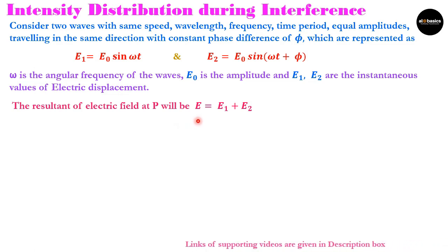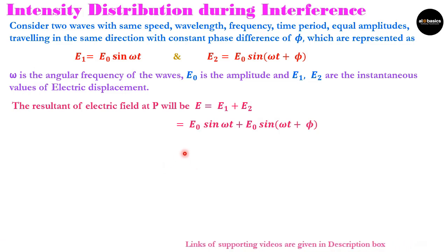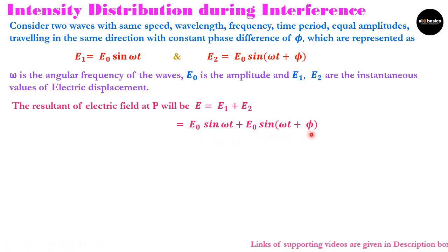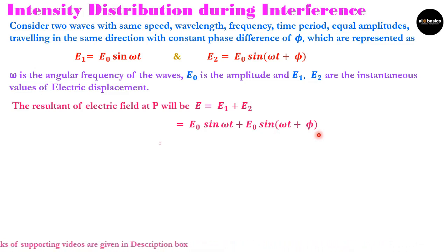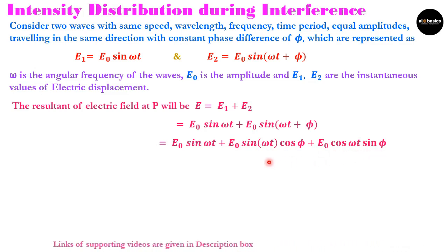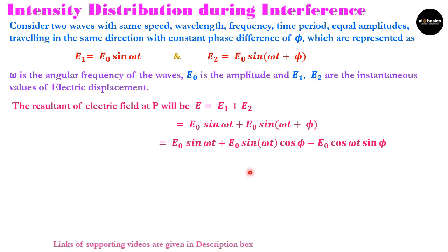Now we want to find this resultant, so we substitute the values of E1 and E2 and get E0 sin(ωt) + E0 sin(ωt + φ). The term sin(ωt + φ) expands using the identity sin(x + y) = sin x cos y + cos x sin y, giving us E0 sin(ωt) + E0 sin(ωt)cos(φ) + E0 cos(ωt)sin(φ).